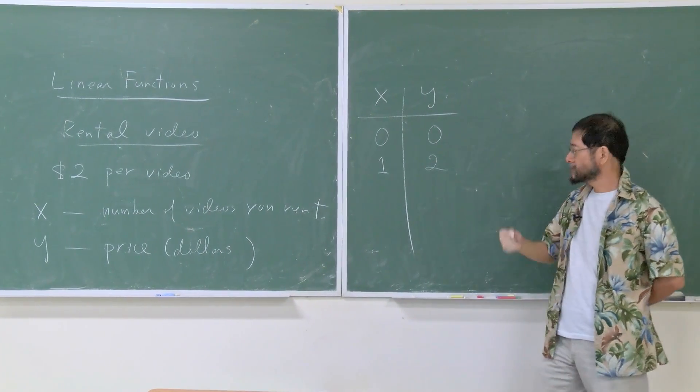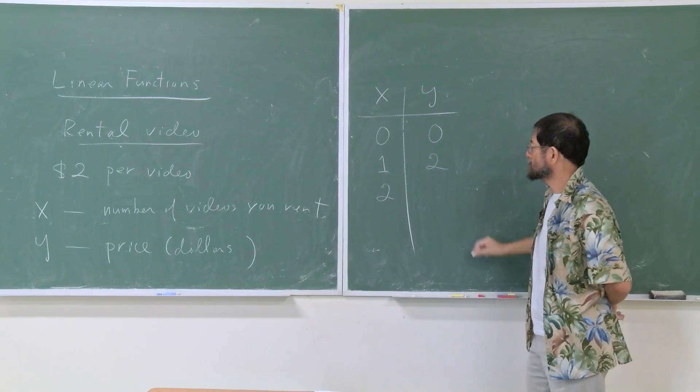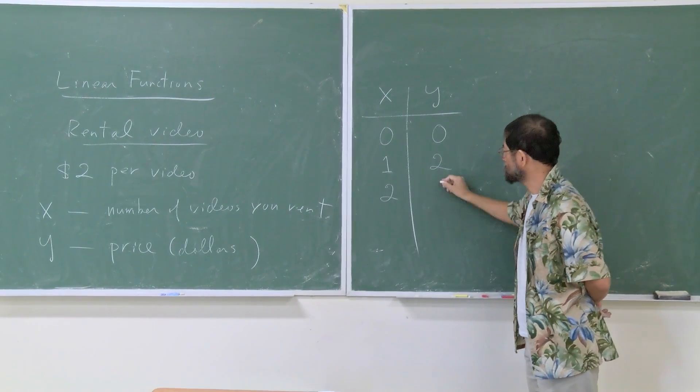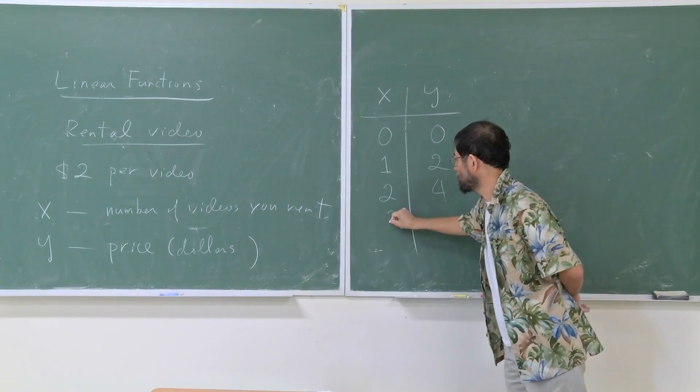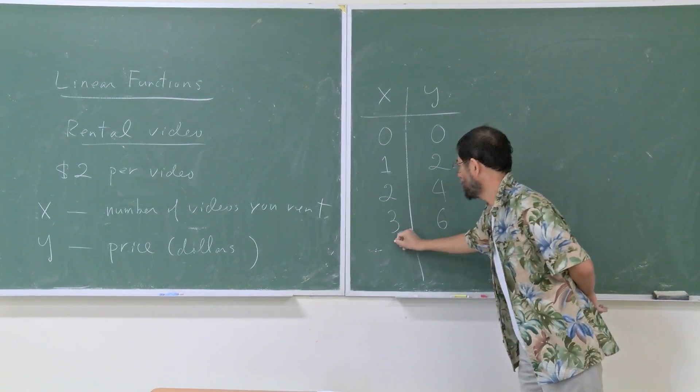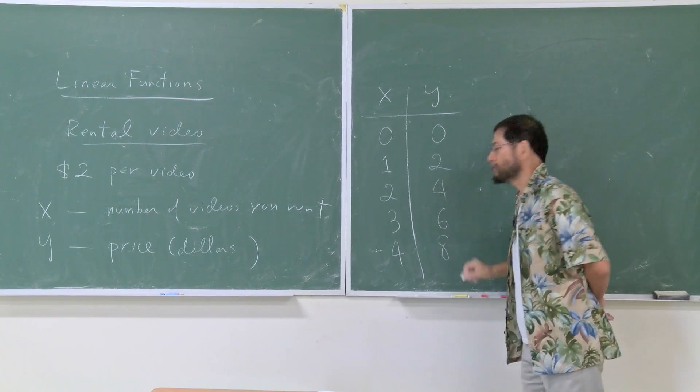Now you start renting more. Two videos—you need to pay another $2, so together you have to pay $4. Then you rent three videos, then six. Four videos, eight, and so on.